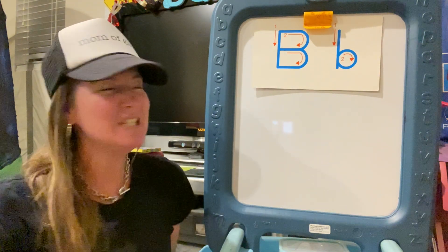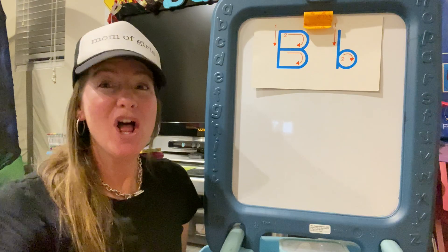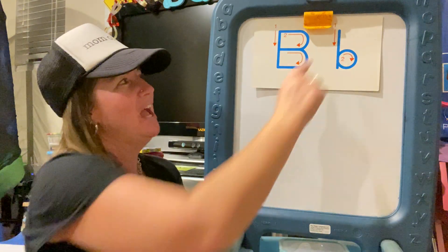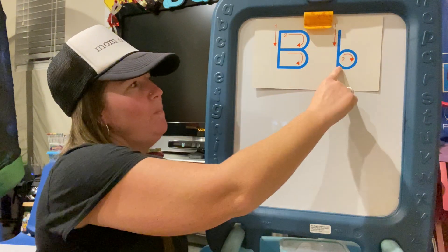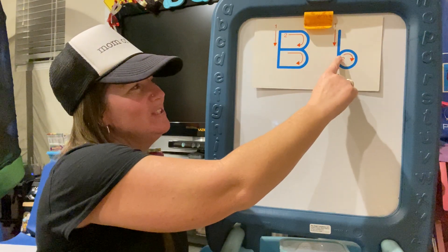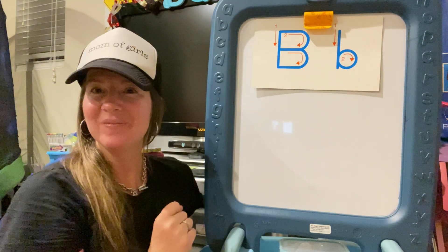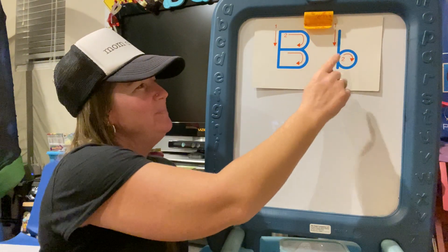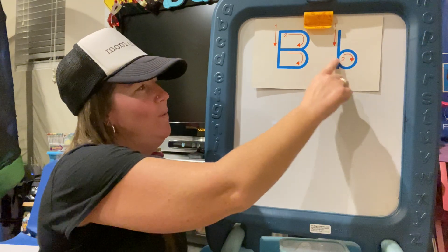Now let's practice the little or lowercase b. It's a line straight down — buh, buh, buh — and then a circle. Buh, buh. Very good. Try it one more time — buh, buh, buh, buh.